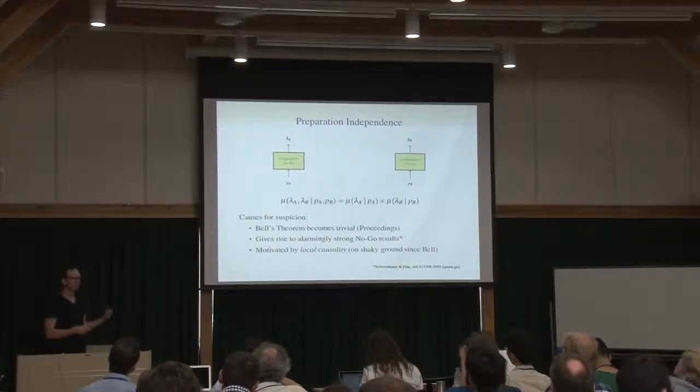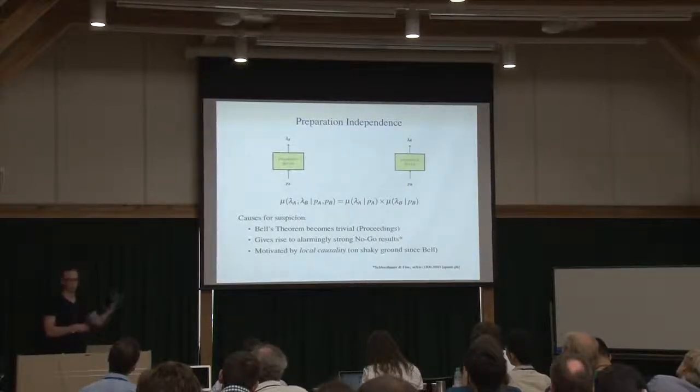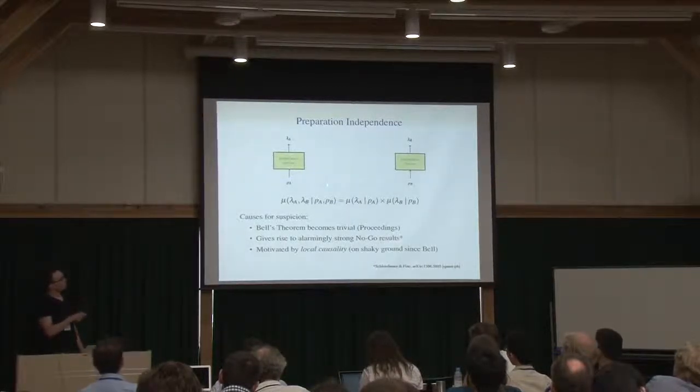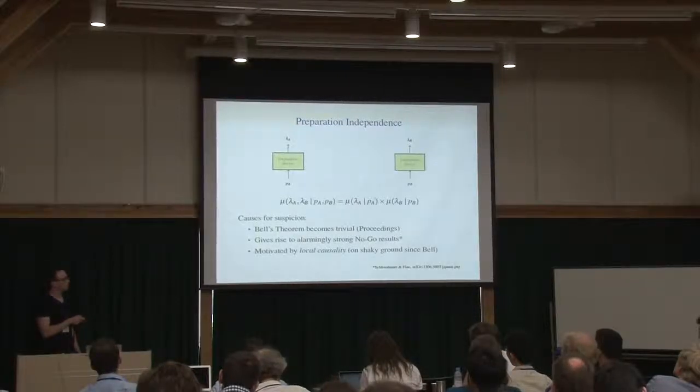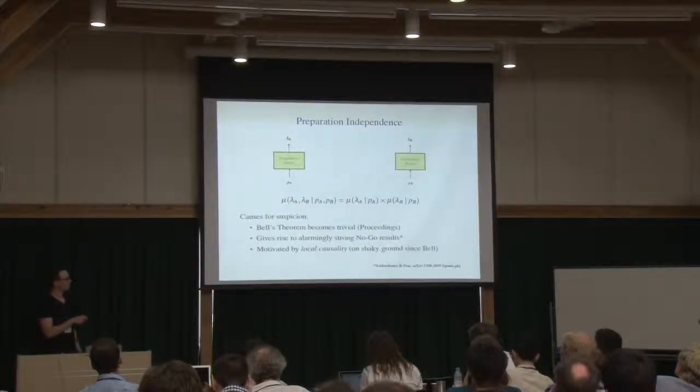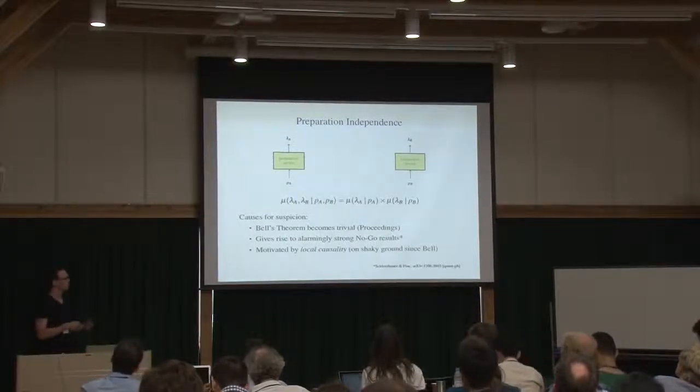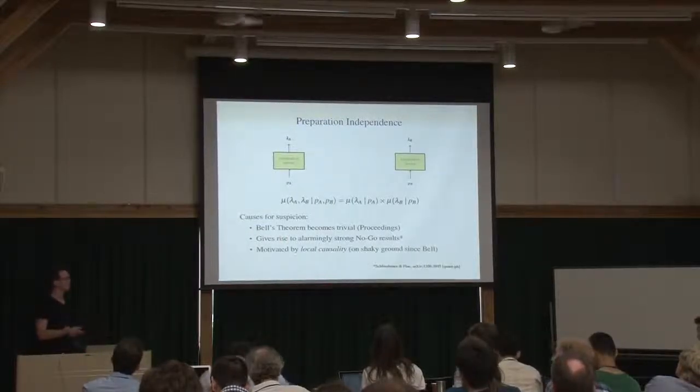There's some immediate causes for suspicion. It's not enough to kill this assumption, but some causes for suspicion like this: if I grant preparation independence, Bell's theorem becomes completely trivial. So that's disgusting, but these are early stage concerns.